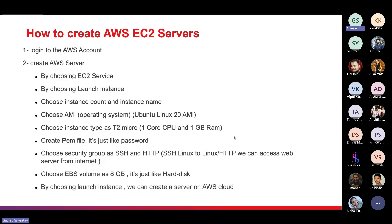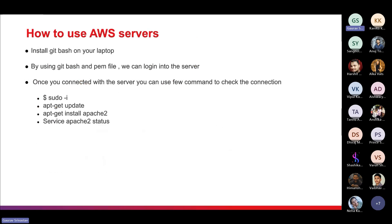Next, choose EBS storage — essentially the hard drive for the server. By default it is 8 GB, which is typically enough. After that, click 'Launch Instance' to create the server on the AWS cloud. Once the server is created, your next step is to connect to it so you can install whatever software you want.